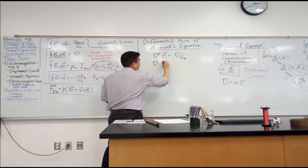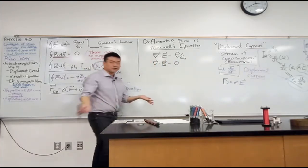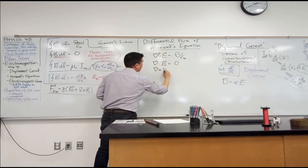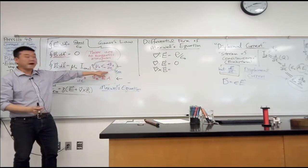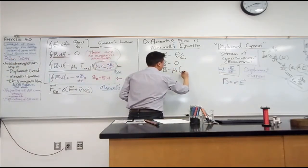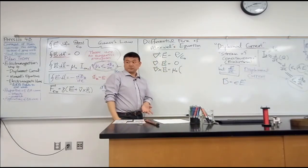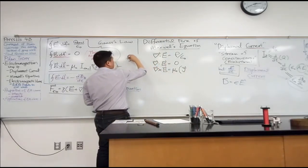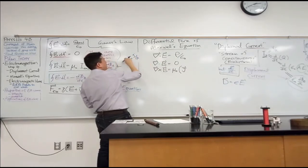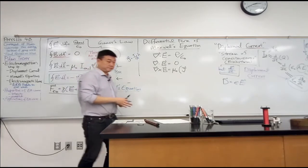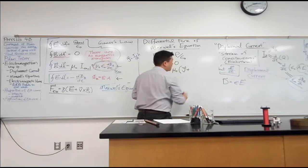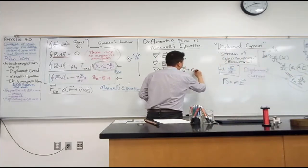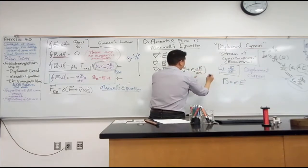The divergence of the magnetic field is zero because there's no magnetic charge. The curl of the magnetic field, including Maxwell's term, is mu naught times the current density J plus epsilon naught times the rate of change of the electric field. Just as a reminder, current density J equals current divided by area, in the normal direction.